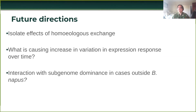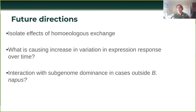There are lots of future directions. These lines have many genomic rearrangements and lots of other things happening in the background, so studies that can isolate the effects of homeologous exchange will be extremely important. Another direction is finding out what may be causing the increase in variation in expression — this could be a weakening of the dosage constraint, or evidence that the dosage constraint isn't as strong as it appears immediately after a dosage change. And finally, really exploring this interaction with subgenome dominance outside cases of Brassica napus to see if this is a more general interaction between the two.